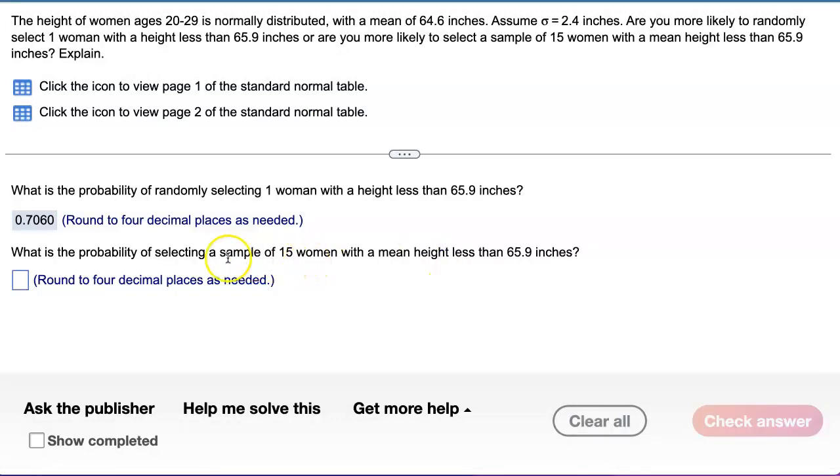But now the second question is asking from a sample of 15 women. So what's going on is you go out and you ask 15 women their heights. And what you do is you add up all those heights and you divide it by 15. And they're asking what's the chance that that average is less than 65.9. Now this is talking about the sampling distribution of sample means.